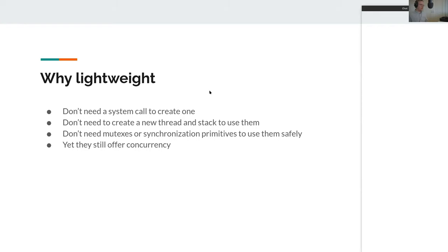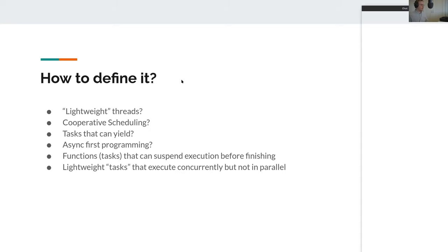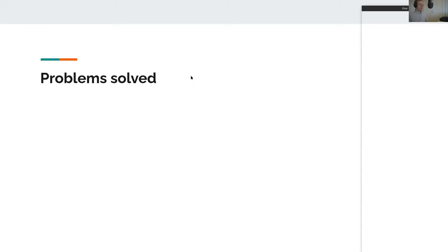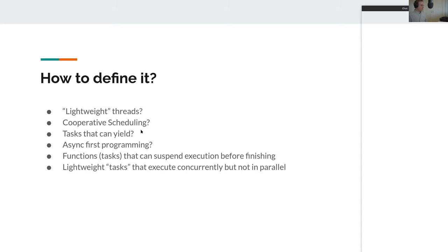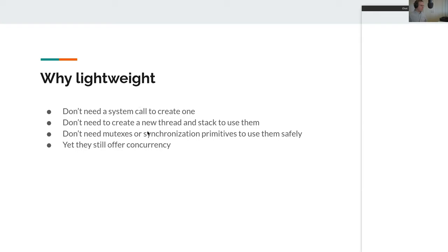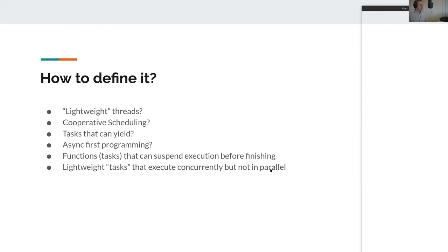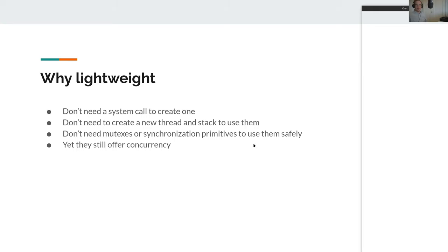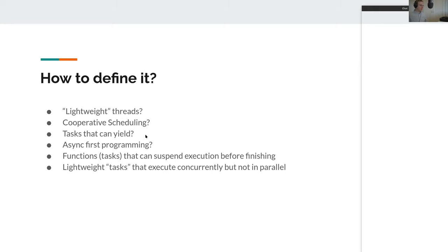Let's look at some problems that coroutines can solve. We know that they can yield, they can stop executing somewhere. We know that they take fewer resources, and we know that they don't need synchronization primitives. So if you can think of anything, you are free to write it in the chat.